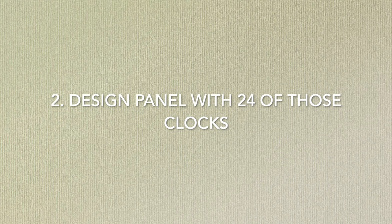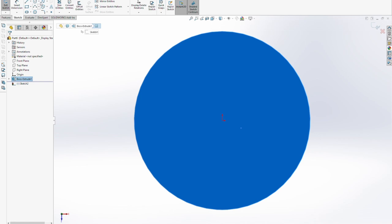For this project I took a three-phase approach to the design. The first was to figure out how to make one clock, then design a panel with 24 of those clocks, and then build and program those clocks to make a digital clock.